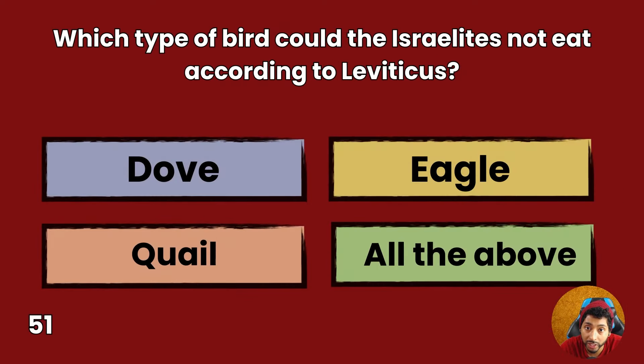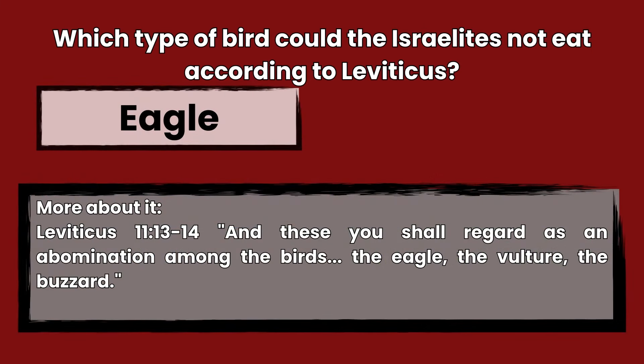Question 51: Which type of bird could the Israelites not eat according to Leviticus? Dove, eagle, quail, or all of the above? Answer: Eagle. Leviticus 11:13-14 — And these you shall regard as an abomination among the birds: the eagle, the vulture, the buzzard.